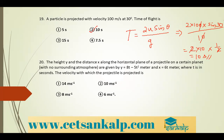Next problem: the height y and distance x along horizontal of a projectile on a certain planet with no atmosphere are given by y = 8t − 5t² meters and x = 60t meters. Comparing with the standard projectile equations: y = u·sinθ·t − ½g·t² and x = u·cosθ·t.